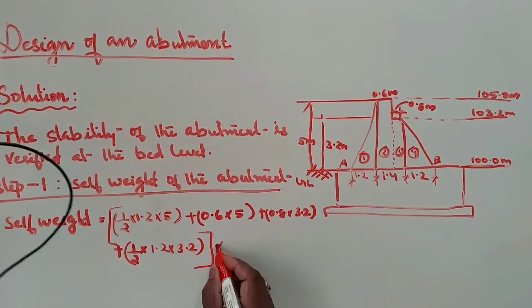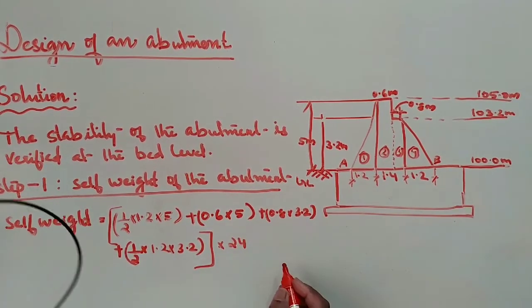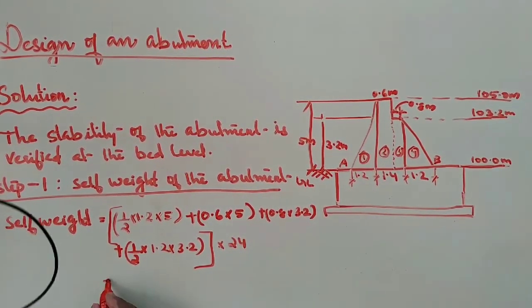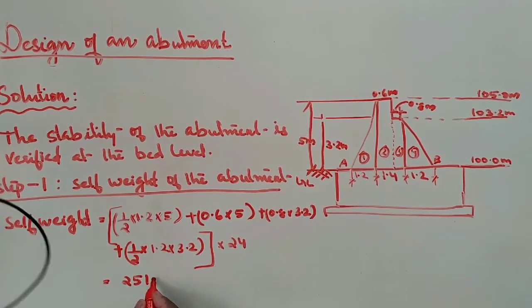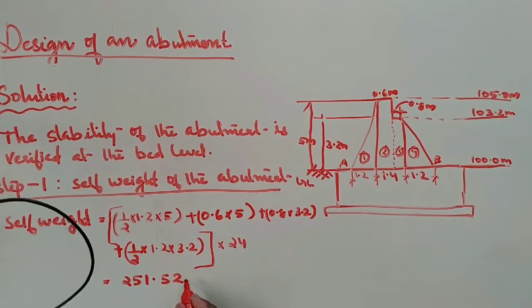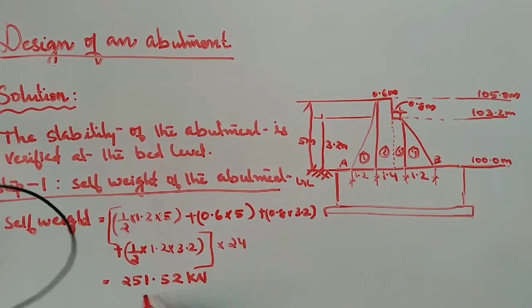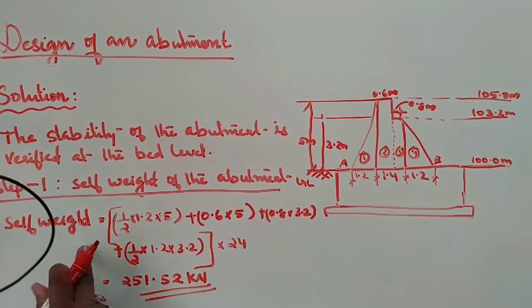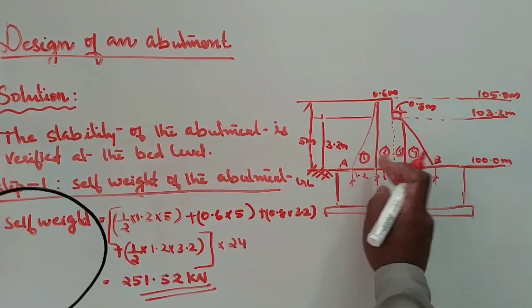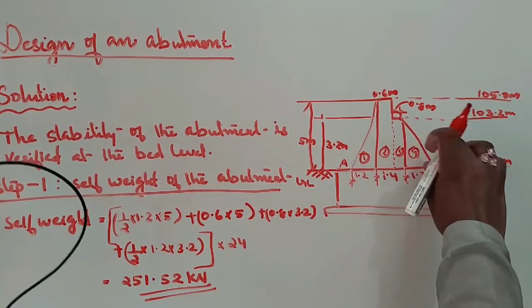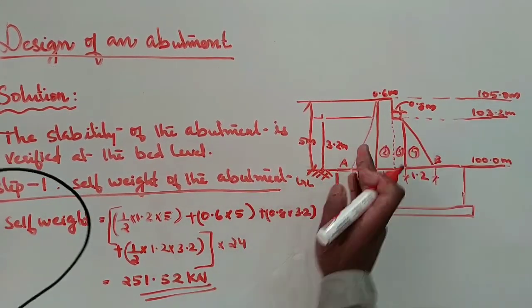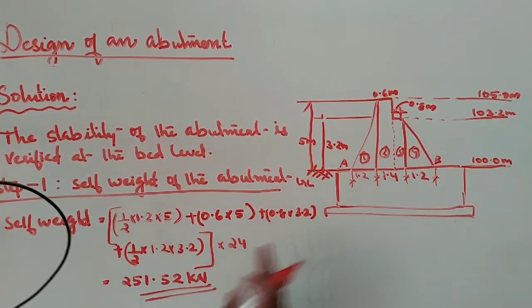24, unit weight of concrete. And the answer is 251.52 kN. The self weight of the abutment is 251.52 kN. Divided the section and calculated.